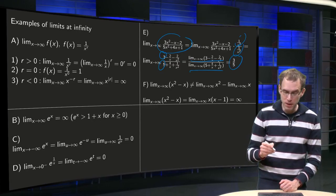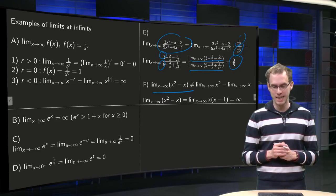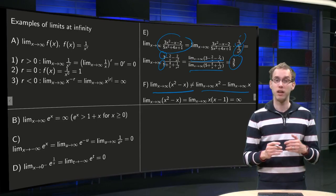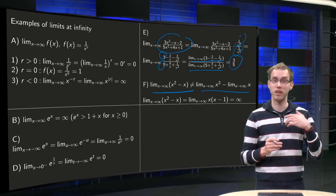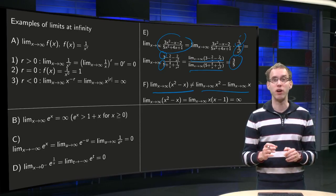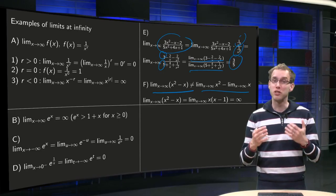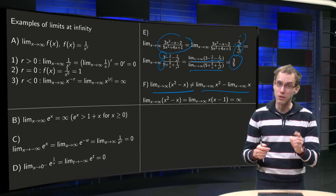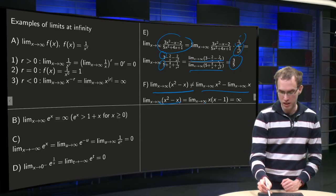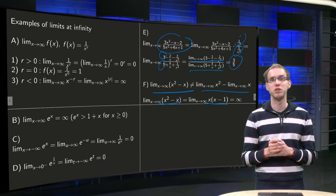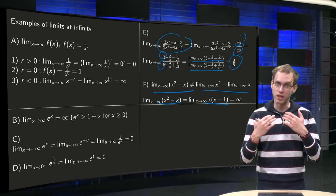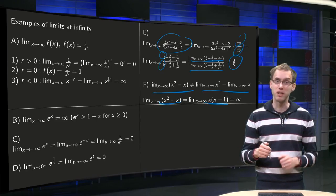We have to be a bit more careful with this one: the limit of x squared minus x. If we just apply the sum rule, something goes wrong — we get the limit of x squared minus the limit of x, giving infinity minus infinity. But infinity is not a real number; we cannot compute infinity minus infinity, so the sum rule doesn't apply here — it only holds if both limits exist, and they do not. What we have to do is write x squared minus x as x times (x minus 1). Now we see that x blows up and x minus 1 blows up, so we have a product of two factors both blowing up, meaning the whole limit also blows up — this limit equals infinity.